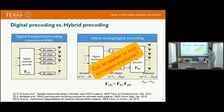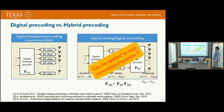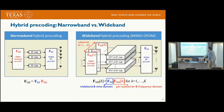Most of the prior work in the hybrid architecture assumes narrowband systems, so this architecture cannot be applied to wideband systems. Let's look at why. The left figure shows the narrowband hybrid pre-coding model, and the right figure shows the wideband hybrid pre-coding model.